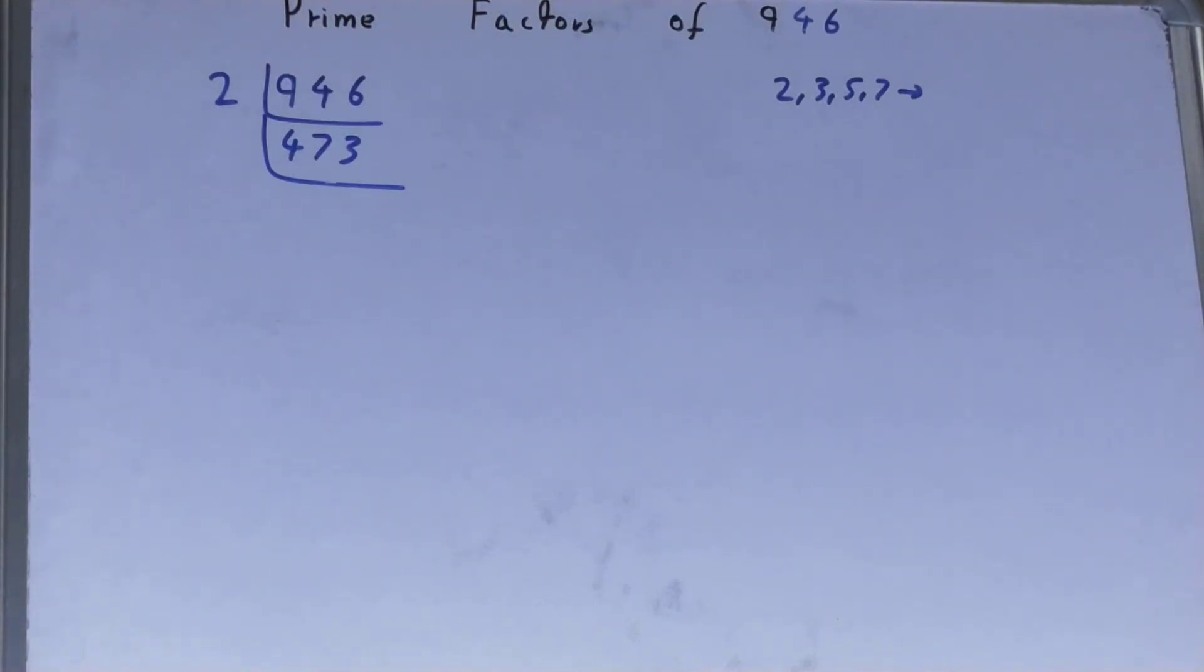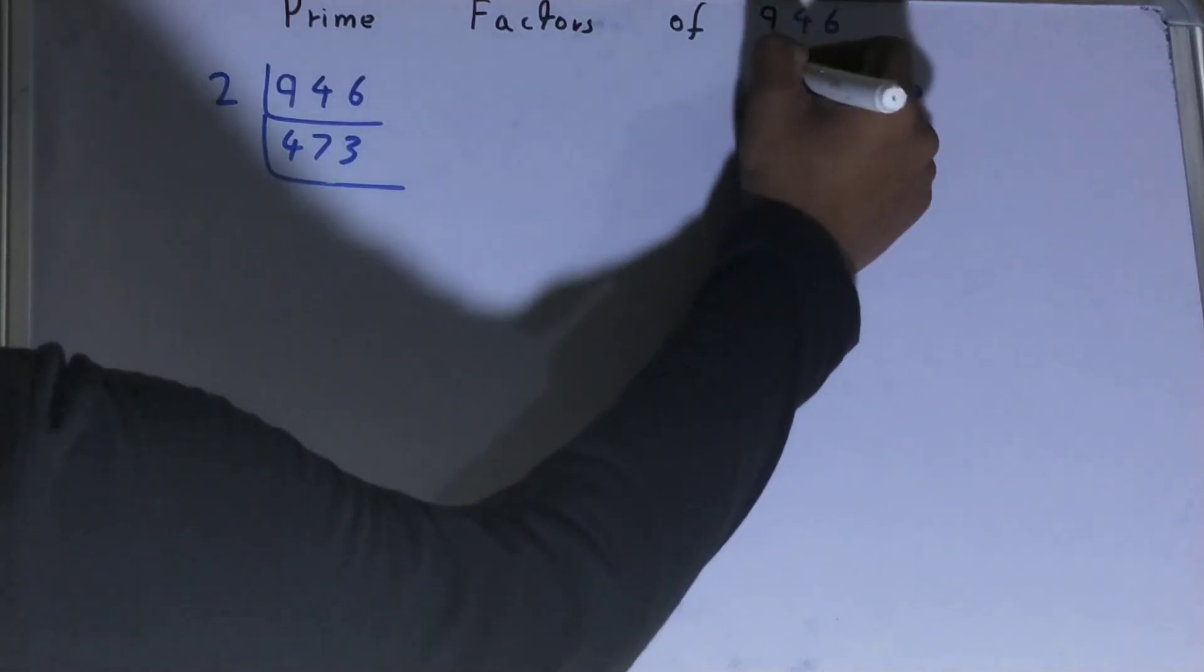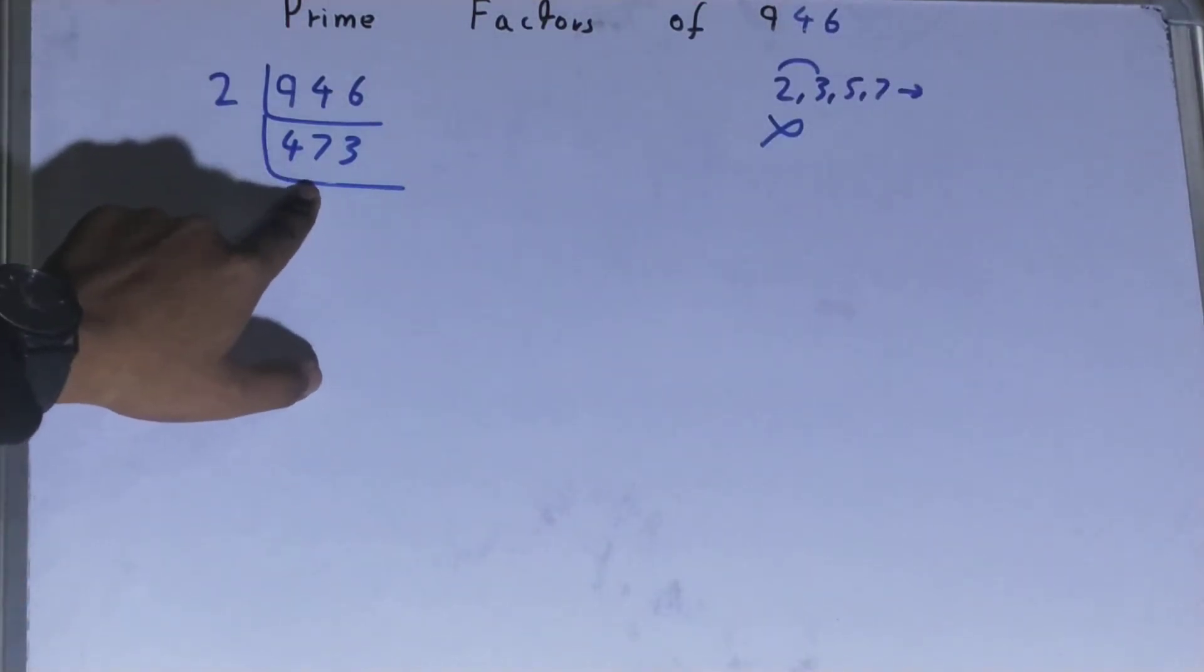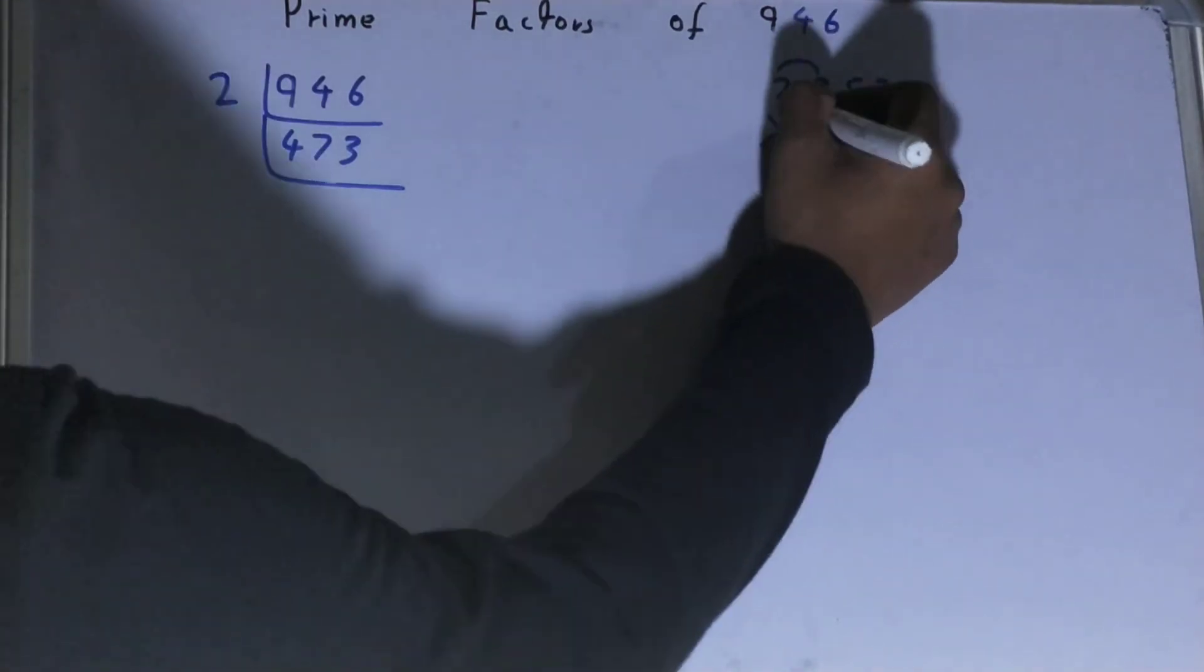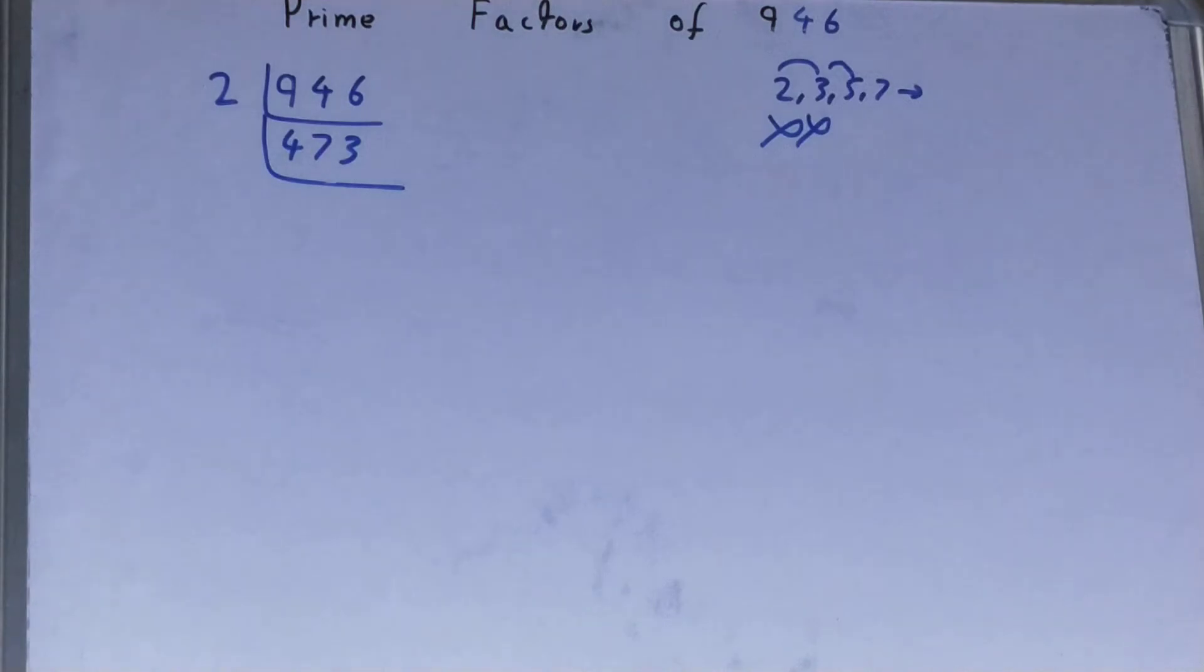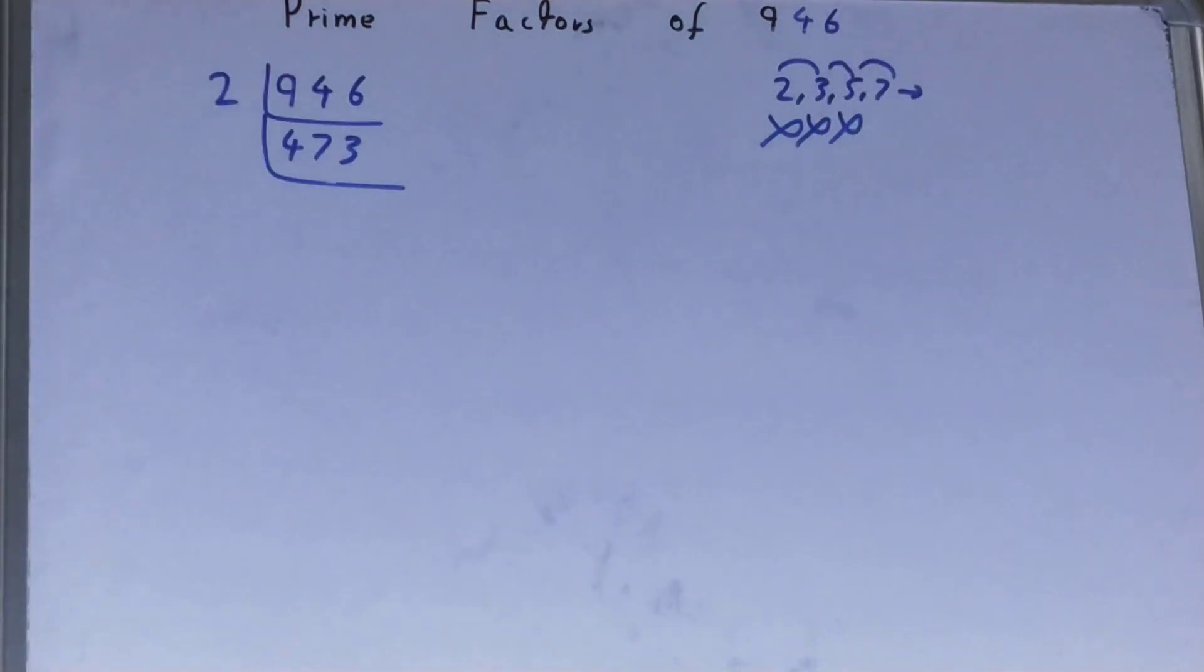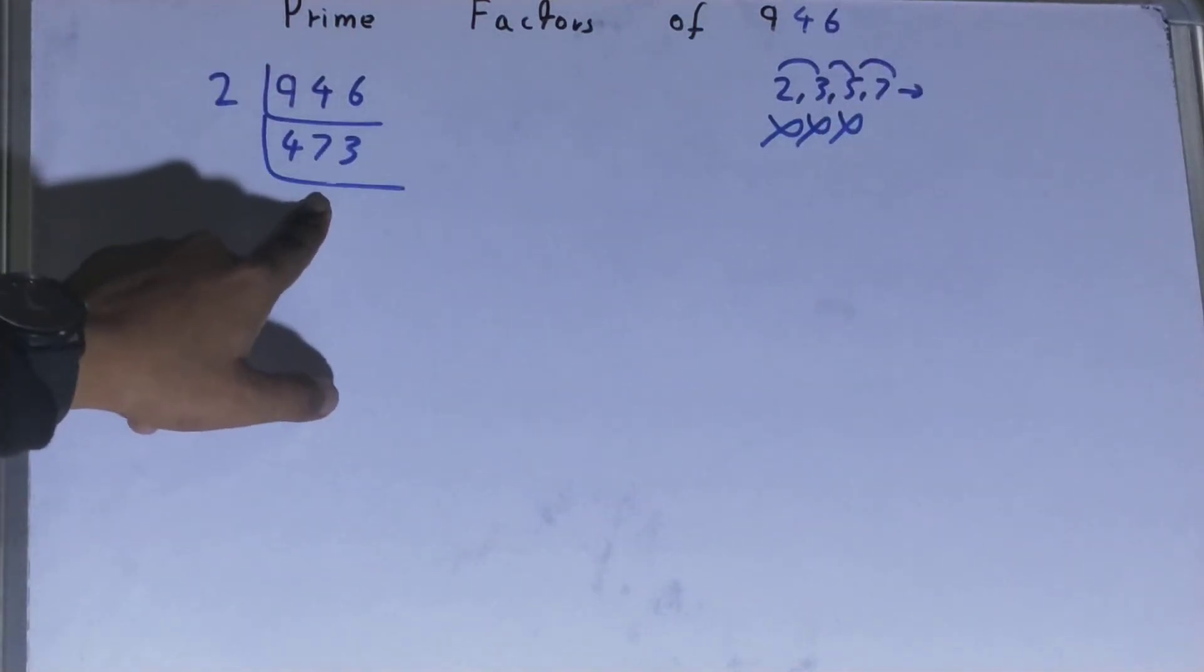So we will be going to the next lowest prime number, that is 3. Is it divisible by 3? No, it is not divisible by 3. Let's check it with 5. The last digit is neither 5 nor 0, so it is also not divisible by 5. Let's check it with 7. No, it is not divisible by 7 also.